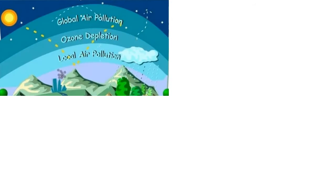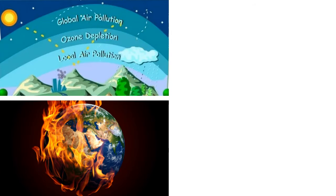Let us study the effects of air pollution on the atmosphere. The first and most destructive effect is the depletion of the ozone layer. Earlier we studied that the ozone layer is present below the stratosphere at the height of 48 km from Earth's surface. It protects the living world of the earth from ultraviolet radiation from the sun. However, nowadays the ozone layer is getting depleted. The greenhouse effect and global warming are responsible.